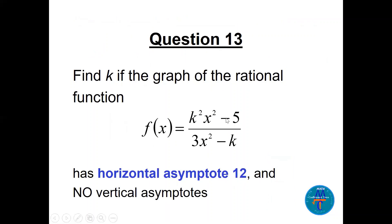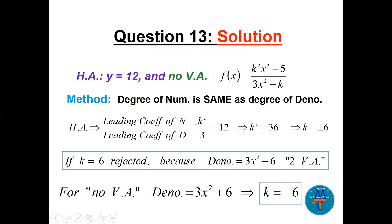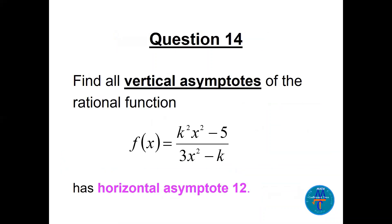Question 13: find k if the rational function has horizontal asymptote 12 and no vertical asymptotes. When degrees are equal, the horizontal asymptote equals k²/3 = 12, so k²=36 and k=±6. If k=6, the denominator becomes 3x²-6, giving two vertical asymptotes — rejected. For no vertical asymptotes, the denominator must be 3x²+6 (no real roots), so k = -6.